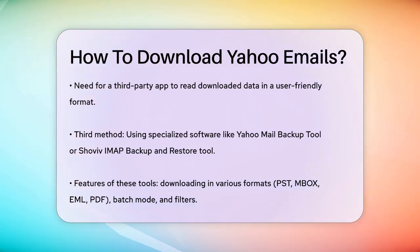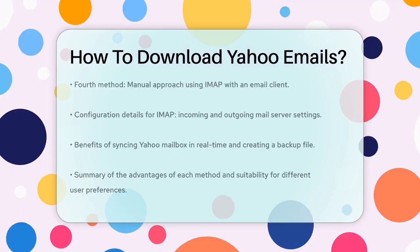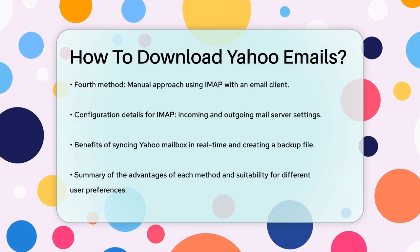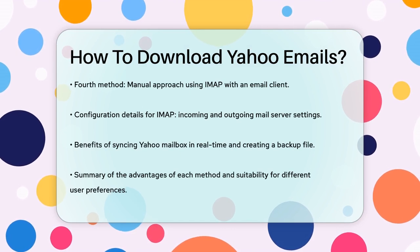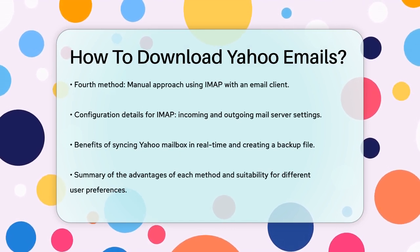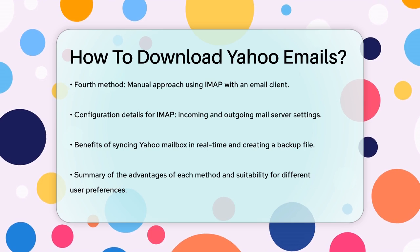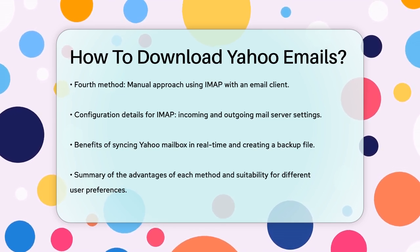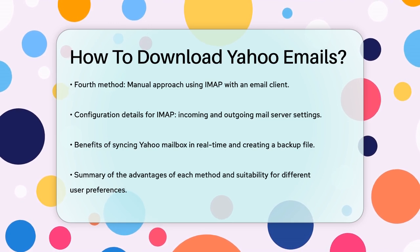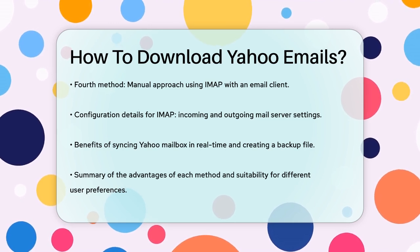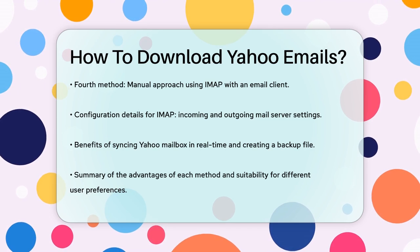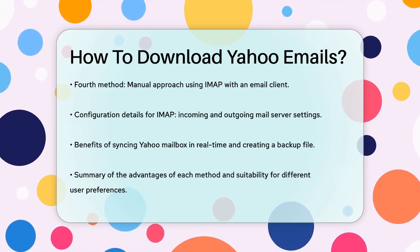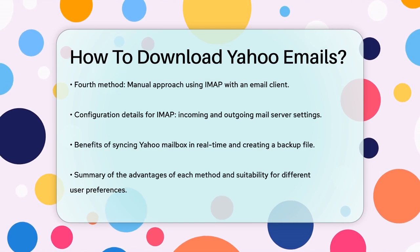Lastly, if you're looking for a manual but less technical approach, you can use the IMAP protocol. You can configure IMAP with a standalone email client like Outlook or Windows 10 Mail. You'll need to enter your Yahoo! IMAP server details, such as the incoming mail server imap.mail.yahoo.com and the outgoing mail server smtp.mail.yahoo.com, along with your login credentials. Once configured, you can download your emails and save them locally. This method allows you to sync your Yahoo! mailbox in real time and create a backup file.